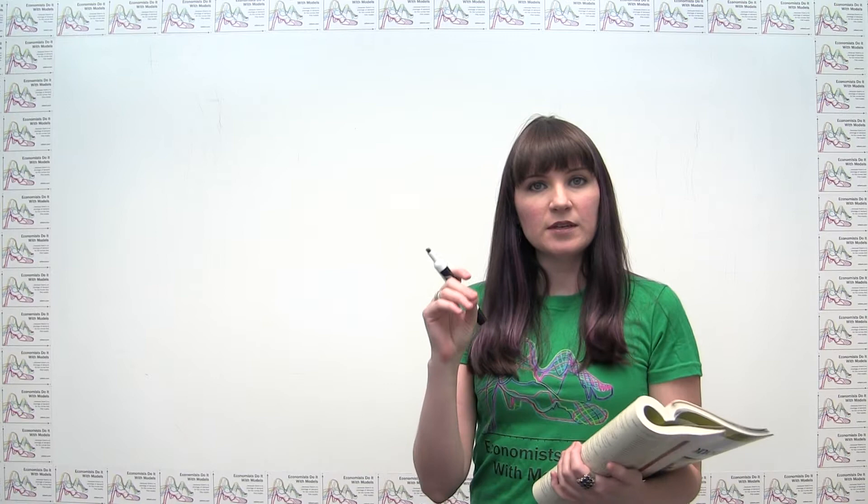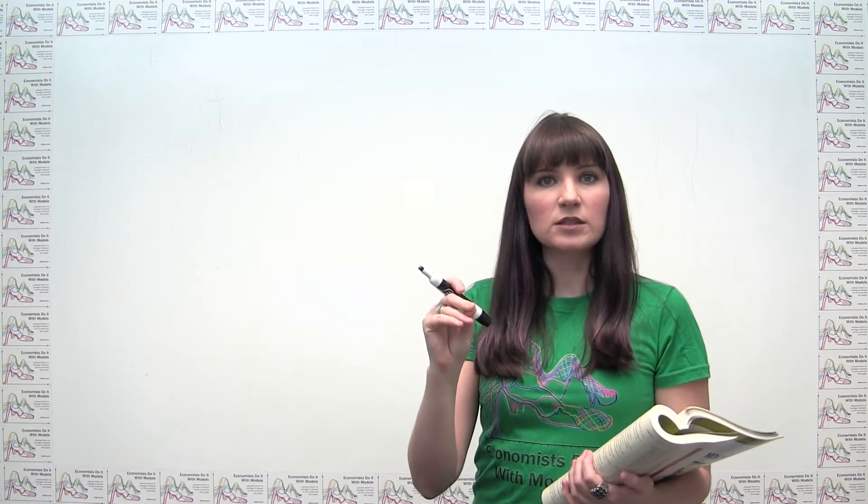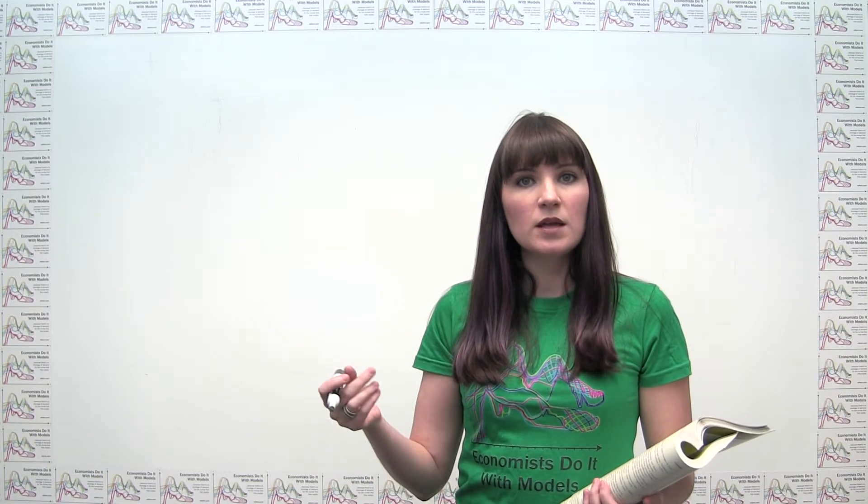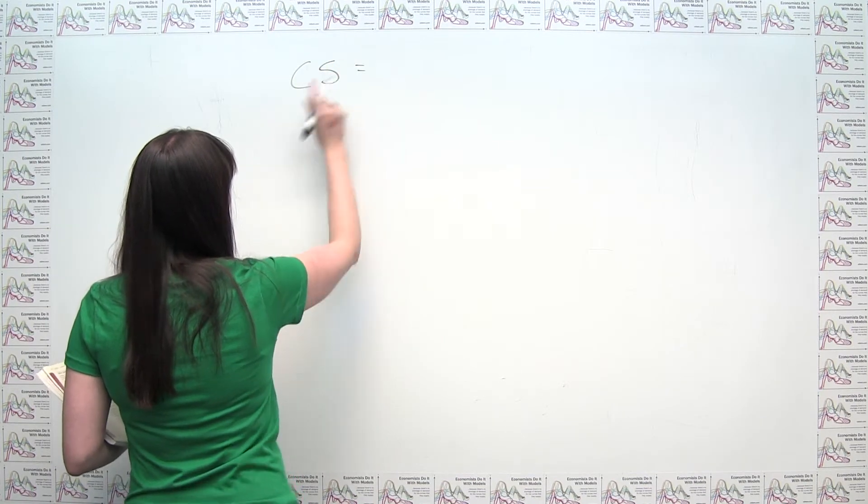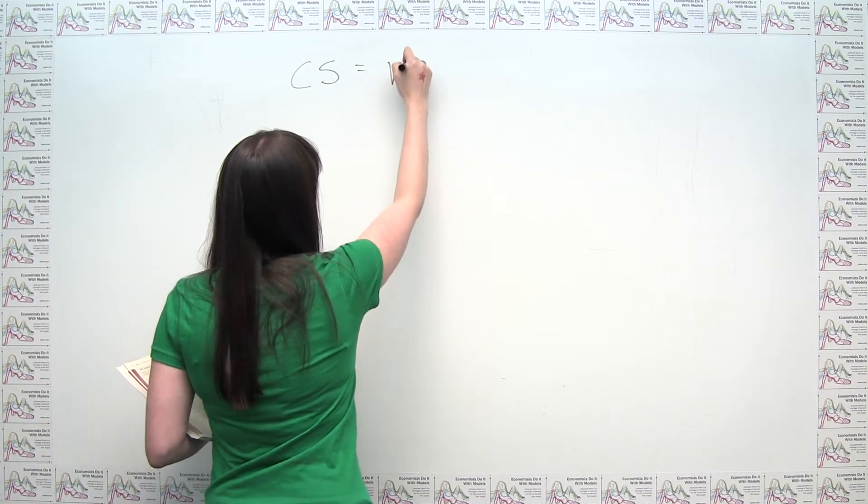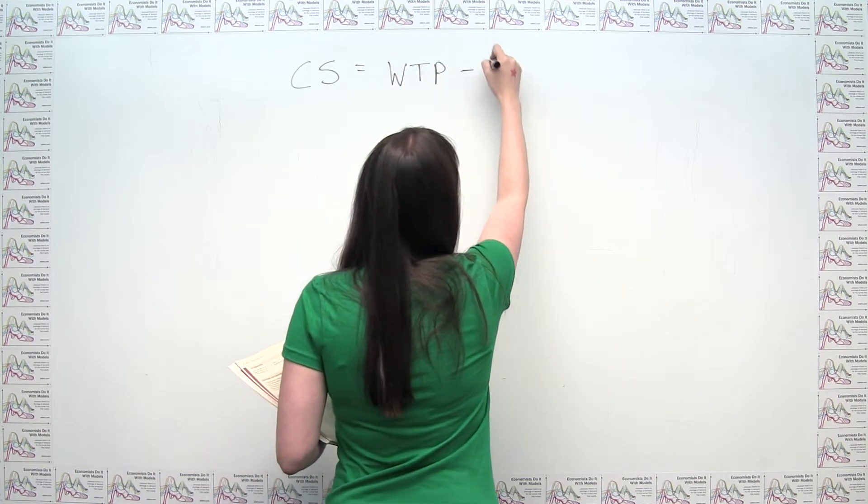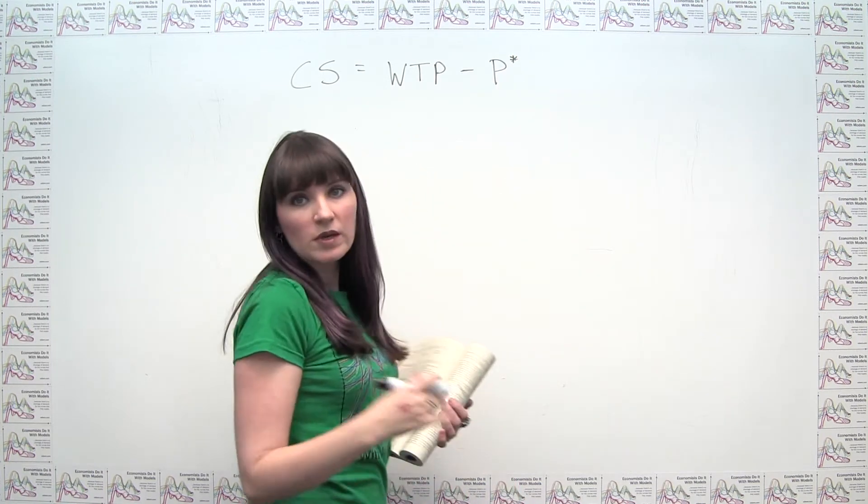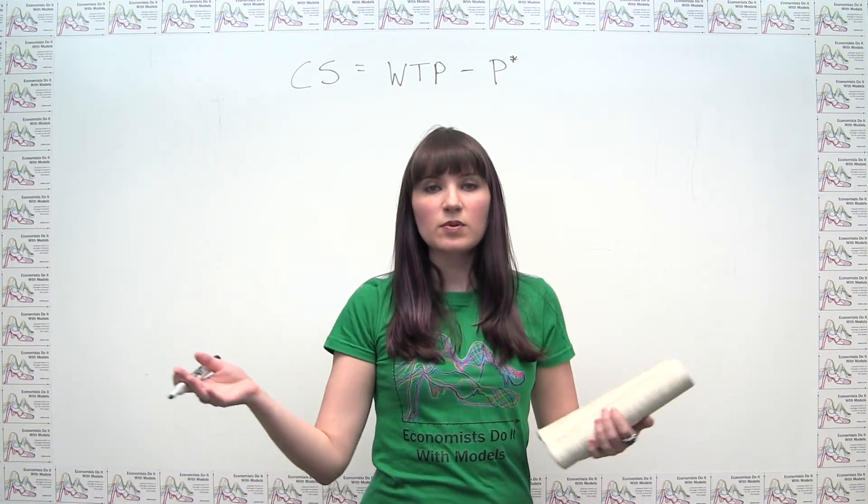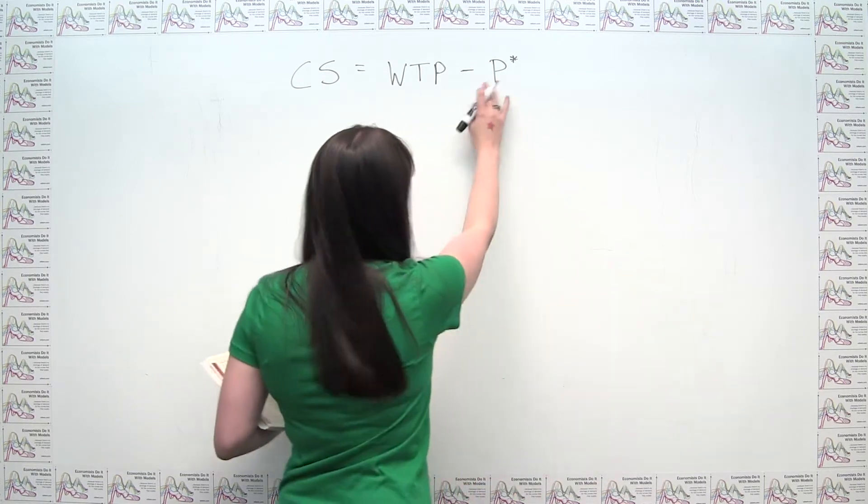So we know that for any given unit of a transaction, the consumer surplus generated by that particular transaction unit is the difference between the maximum that the consumer would have paid, namely their willingness to pay, and the actual price that they pay. So we could say the consumer surplus for a particular unit is equal to willingness to pay minus the actual price paid. And usually this is going to be some P star because prices are usually determined by supply and demand equilibrium.